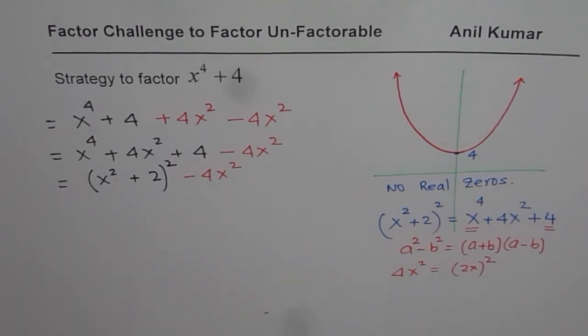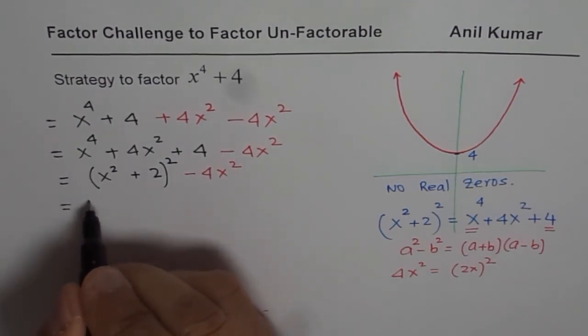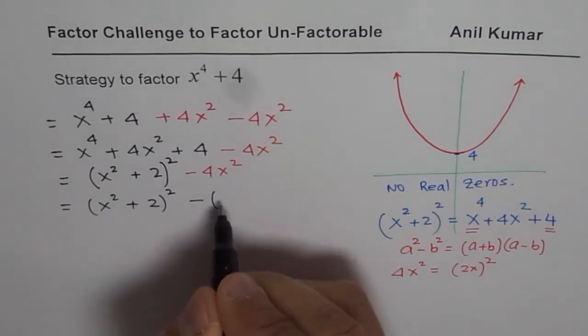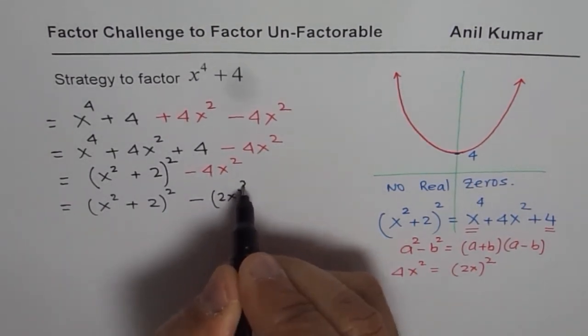So we will rewrite this expression as x square plus 2 whole square minus, think as 2x whole square.